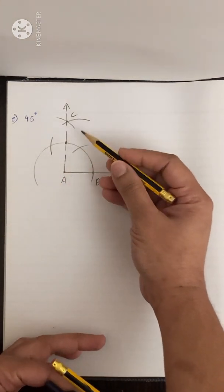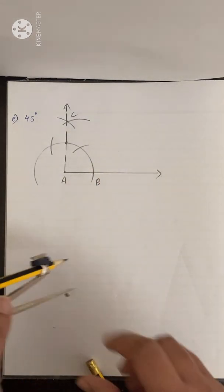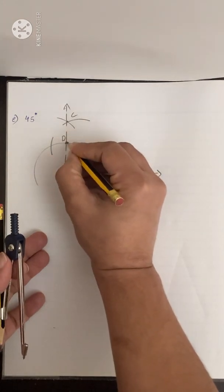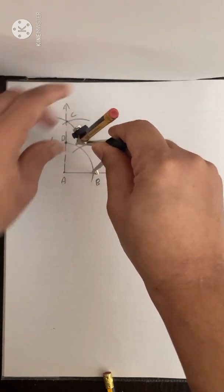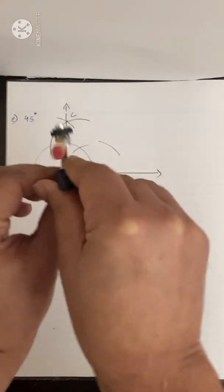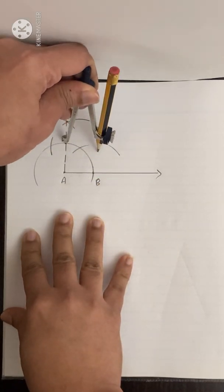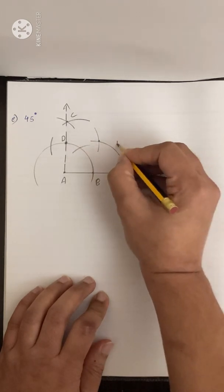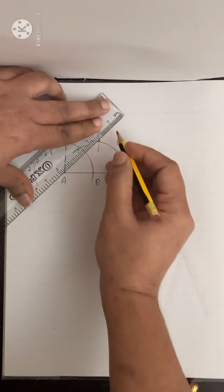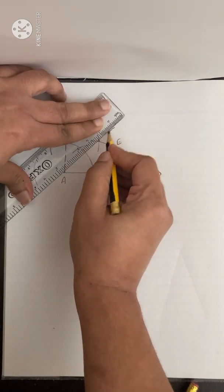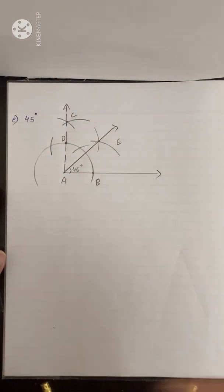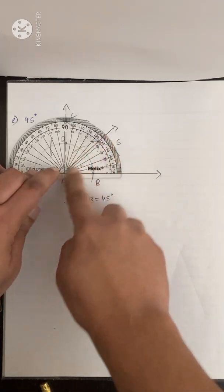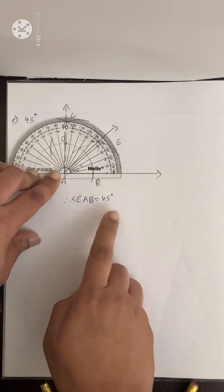Now we are going to draw the bisector of this angle to get 45 degrees. Name the relevant points D. With B as center, take a radius more than half of BD and draw an arc. With D as center, without changing the compass radius, draw another arc. Let the meeting point be E. Join A and E — this is our required angle of 45 degrees. You can verify with your protractor: the ray AE passes through 45. Therefore, angle EAB is 45 degrees.